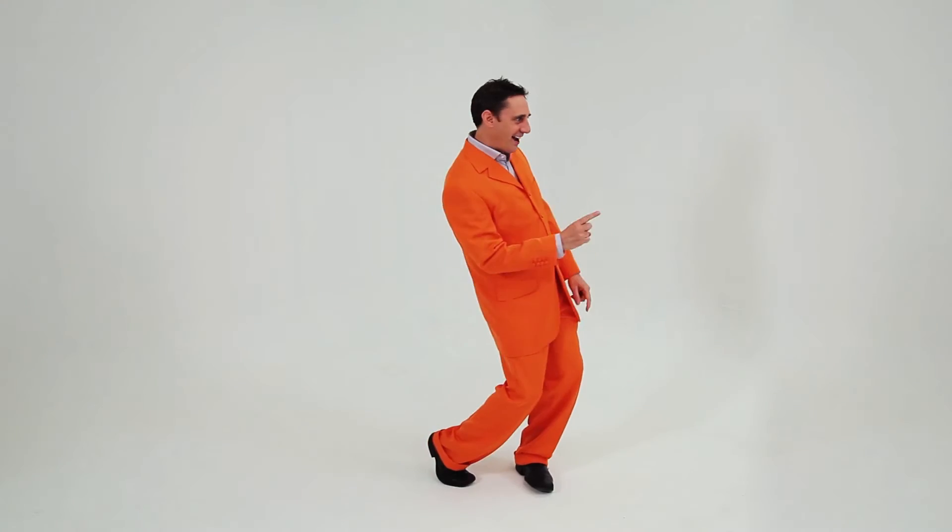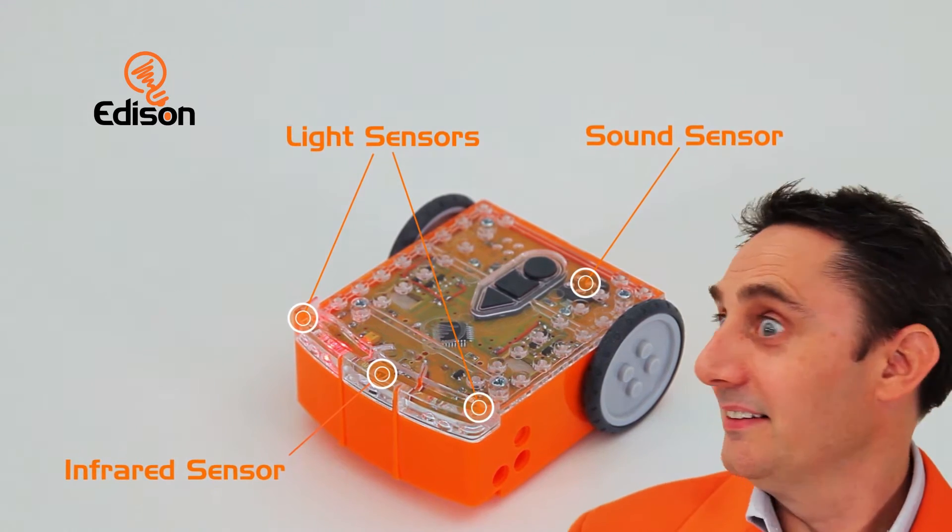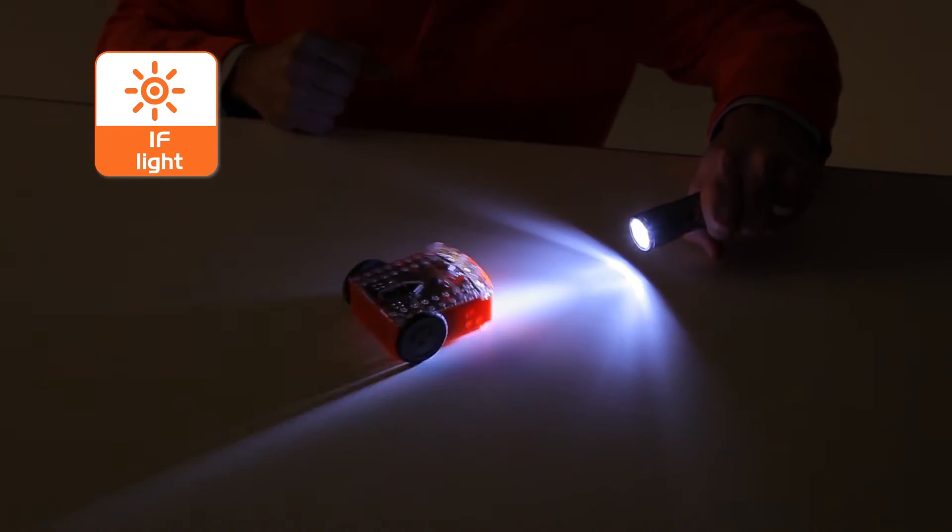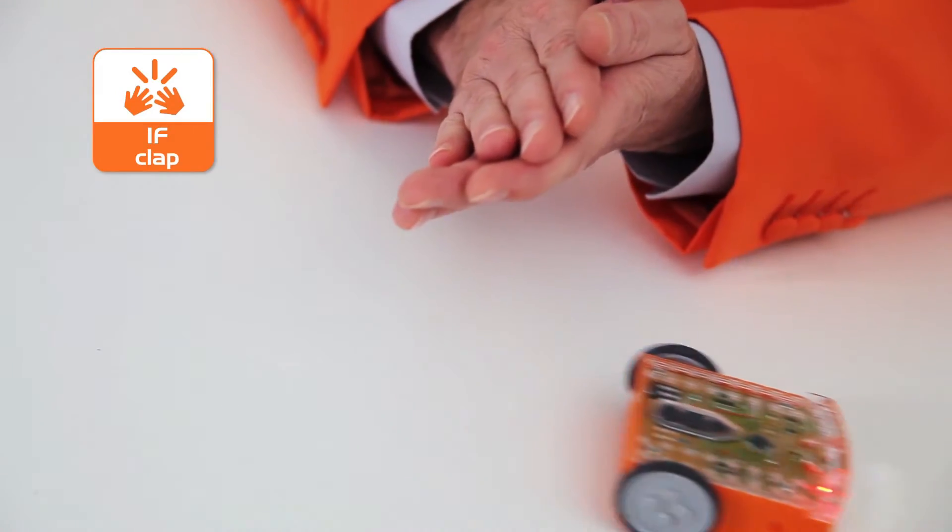So, let's see what Edison can do. For a start, Edison can see and hear by using infrared light and sound sensors. He can find his way around obstacles, sense light levels, detect lines, and respond to sound commands.